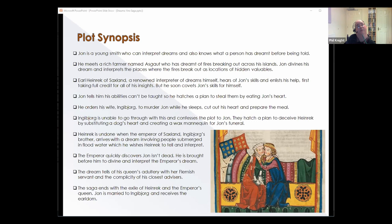Ingeborg can't go through with this and she confesses the plot to John. So they actually plan to deceive Heinrich by substituting the dog's heart and a wax mannequin to stand in for John's funeral. Heinrich is finally undone when the Emperor of Saxland, who is Ingeborg's brother, arrives with a dream involving people submerged to various heights in flood water, which he wants Heinrich to divine and interpret. The Emperor quickly discovers John is dead and he's brought before him to actually interpret the dream. John tells him the dream reveals his queen's adultery with her Flemish servant, with the complicity of his closest advisors. The saga ends with the exile of Heinrich and the Emperor's queen, and a kind of happy ever after as John is married to Ingeborg and receives the earldom.